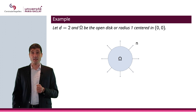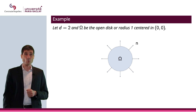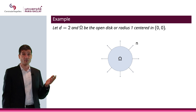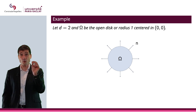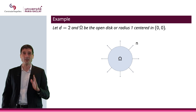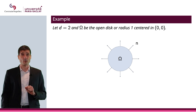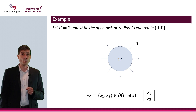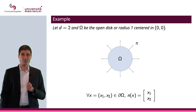Let me give an example. We talked about the disk earlier, so consider the disk centered at (0,0) with radius 1. In this case the normal vector field is what you'd expect: for each point of the circle, the outward normal vector field is the vector pointing outward, in the direction from the center of the disk. I can even write the equation: for each (x_1, x_2) on the boundary, that gives the equation of the normal vector field.